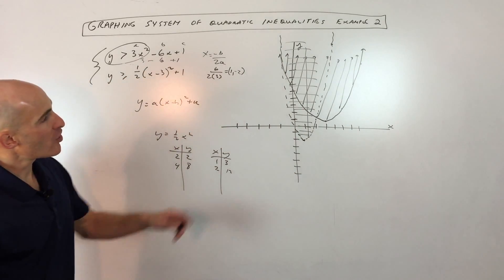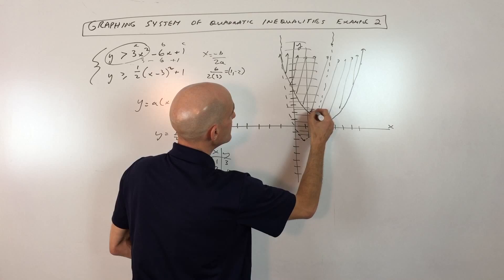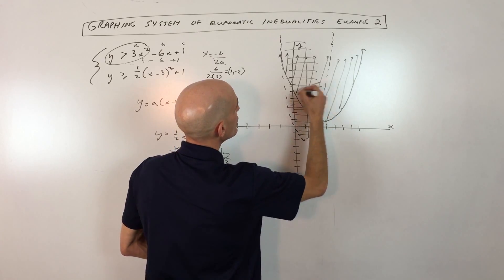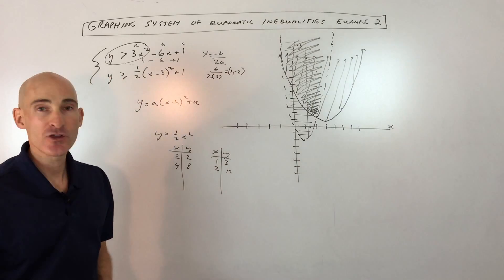So greater than I'm shading above. And you can see where they're crosshatched, where they overlap, that's the solution set. So it looks like it's going to be right in here, is where they're overlapping. And that's how you approach it.